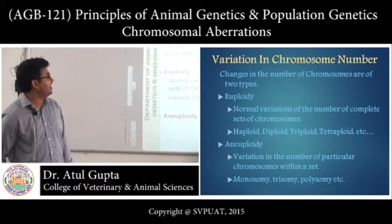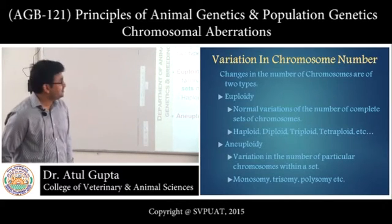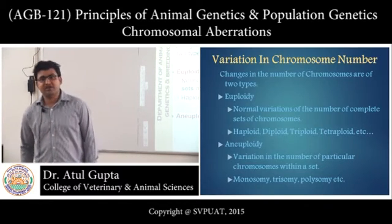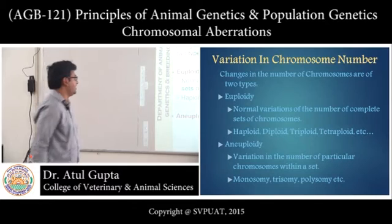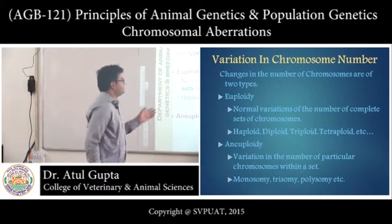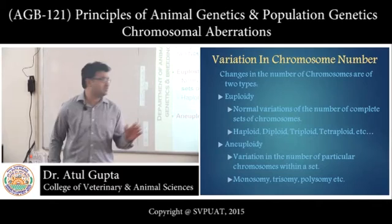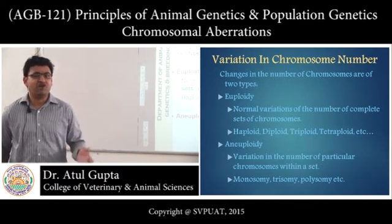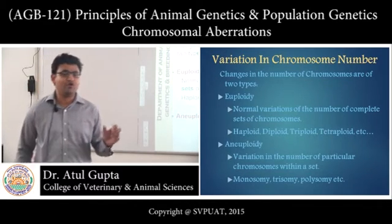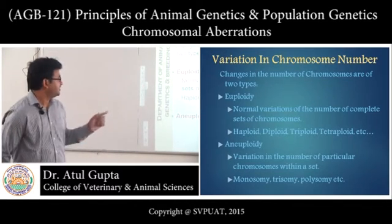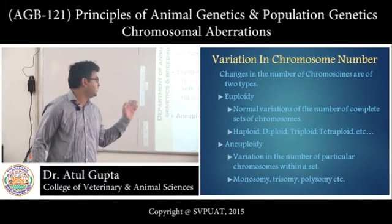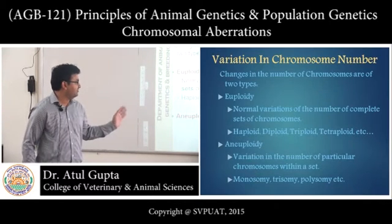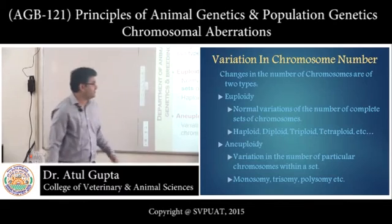First, we will learn about variations in chromosome number. Changes in the number of chromosomes are of two types: euploidy and aneuploidy. Euploidy is the normal variation in the number of complete sets of chromosomes — it involves a whole set of homologous chromosomes. It includes haploid, diploid, triploid, tetraploid, and so on.